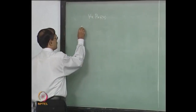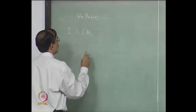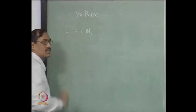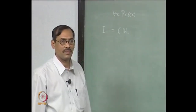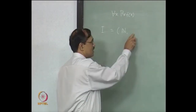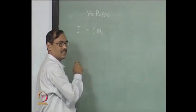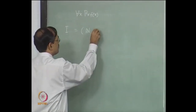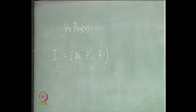We start with one interpretation. Let us take natural numbers as the domain. We have to tell how p is interpreted and how f is interpreted. Instead of writing phi(p) and phi(f) explicitly, we just write p prime and f prime implicitly, telling that p is to be interpreted as p prime and f is to be interpreted as f prime.